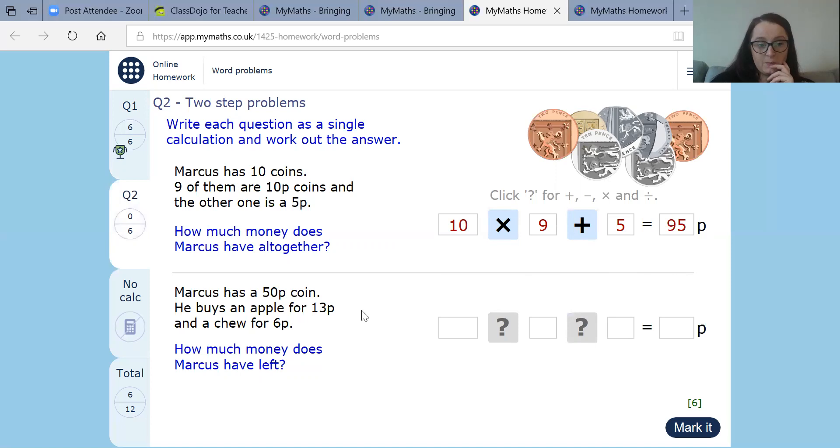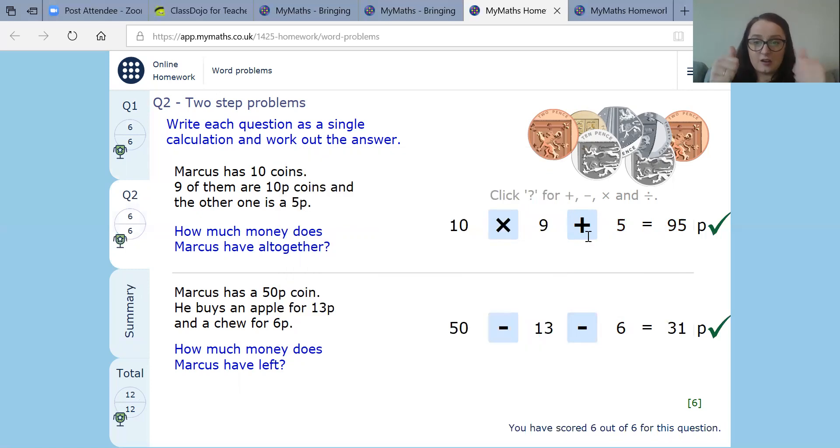So Marcus has a 50p coin. He buys an apple for 13p and a chew for 6p. How much money does Marcus have left? So he's got 50p. So let's put 50p there. And he's buying something. So he's giving the money away. So he's going to be subtracting and 13p because that's how much the apple is. And then he buys a chew. So that's subtracting something else. 6p. So let's try and work this one out. We've got 50 subtract 13. Now 50 subtract 3 is 47. And then we're going to subtract 10. So it'd be 37. And then we're going to subtract 6 as well. So that would be at 37 subtract 6 would be 31. Now remember, it's the P for the pens, 31p. Let's see if I got this right. Let's just press this X here. I got it all right. Super.